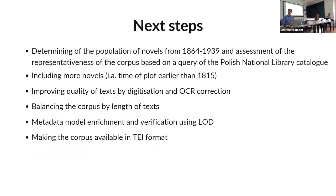The next steps we would like to follow: we need to determine the population of novels from 1864 to 1939 and assess the representativeness of the corpus based on a query of the Polish National Library catalog. We need to include more novels — for instance those with a time plot earlier than 1815. We would like to improve the quality of texts by digitization and OCR correction, balance the corpus by length of text, enrich the metadata model, verify our metadata using linked open data, and finally make the corpus available in TEI format.